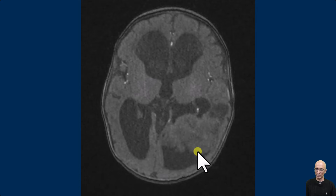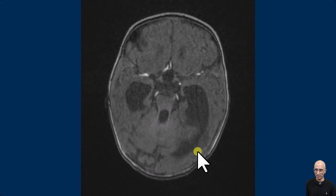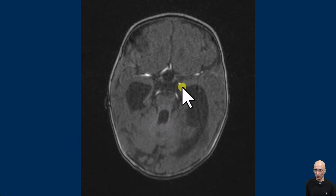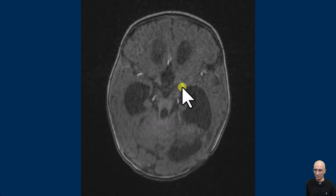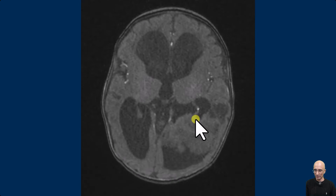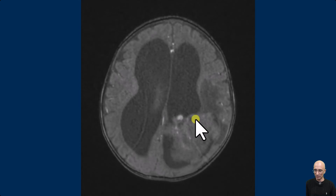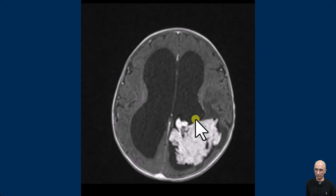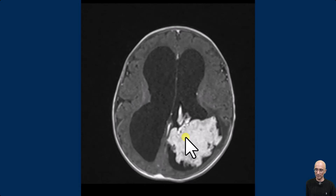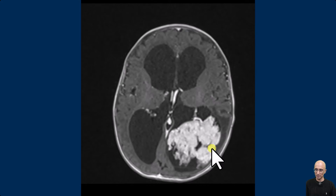The patient subsequently underwent MRI examination. MR angiogram demonstrated a hypertrophied anterior choroidal artery supplying the left lateral ventricular mass. Following administration of intravenous contrast, there is avid enhancement of the left lateral ventricular mass, which demonstrated frond-like projections.